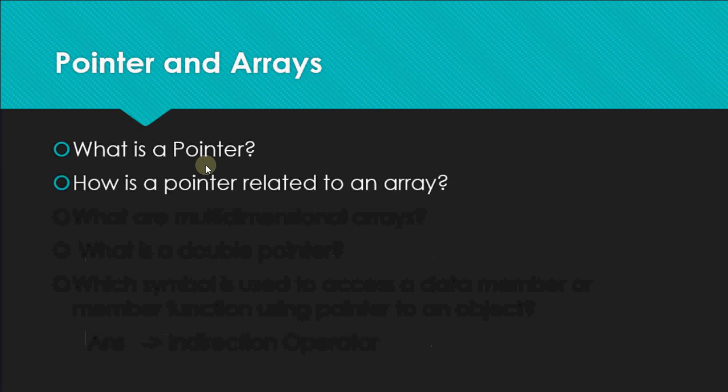How is a pointer related to an array? Whenever you create an array, the name of the array itself is a pointer. When I write int a[5], memory is allocated for five integers, and 'a' itself is the base address where the array starts in memory. So the array name is a pointer to the array, holding the address of the first element.